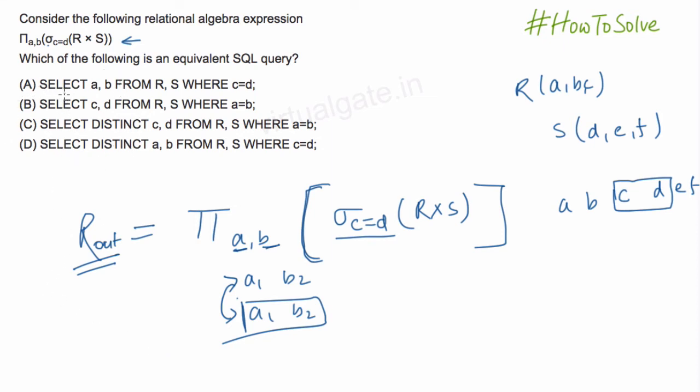So let us go to the options. Here we have select A and B. First of all, let us discard few options. See, here select C and D. We can directly say that this is wrong because the output is not C and D, it is A and B. So this is wrong, similarly C and D, this is wrong.